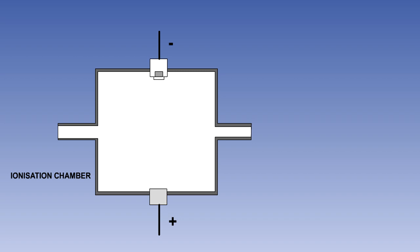Ionization smoke detectors use an ionization chamber and a source of ionizing radiation to detect smoke. The ionization chamber consists of two plates with a voltage across them, along with a radioactive source of ionizing radiation.